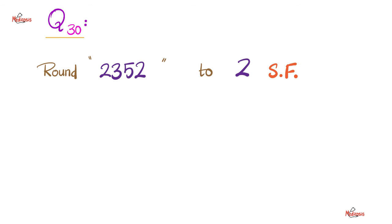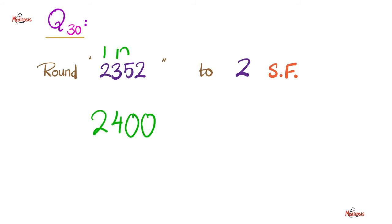Can you round this number to two significant figures? I need this and I need this. Look after — it's a 5, so you round up. The doofus writes 24, but 2,352 is far, far, far from 24. You need to add two non-significant zeros after: 2,400. That's close enough.